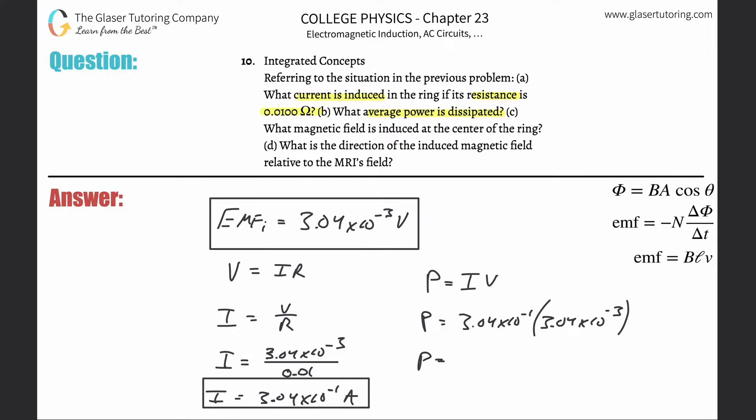So 3.04 times 10 to the minus 1 times 3.04 times 10 to the minus 3 equals 9.24 times 10 to the minus 4th, and that is in terms of watts. That's the unit for power.